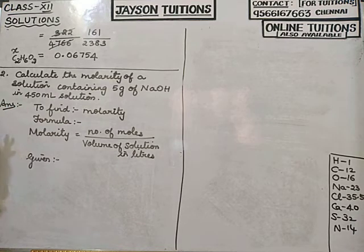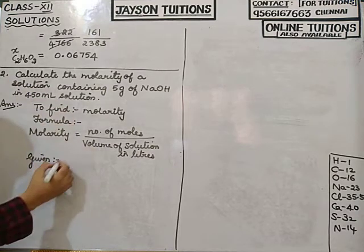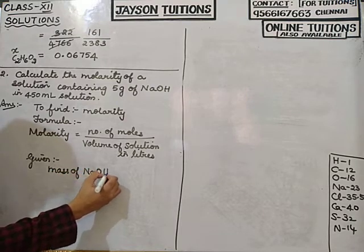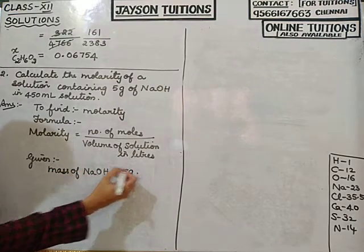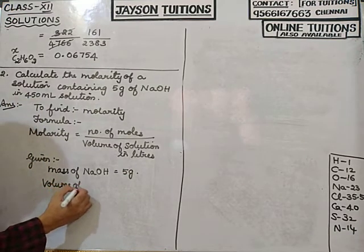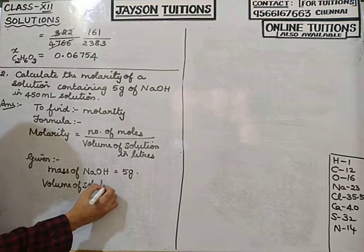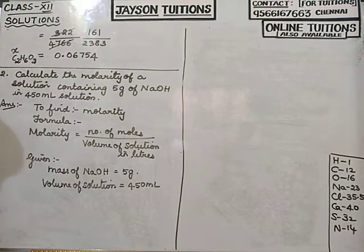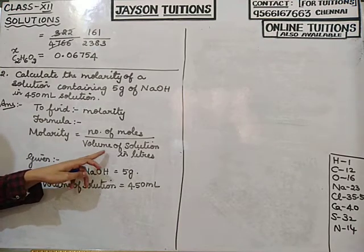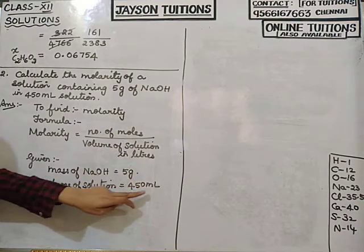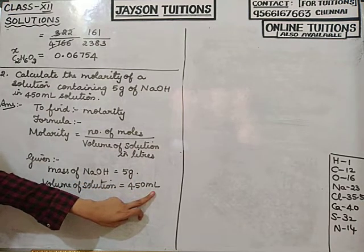Even if you don't know the answer, write the formula, 'to find,' and 'given' — they will give one to one-and-a-half marks in the exam for this. Given: mass of NaOH = 5 grams; volume of solution = 450 ml. But the formula requires volume in liters, not milliliters.